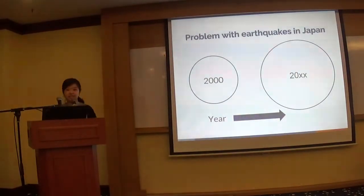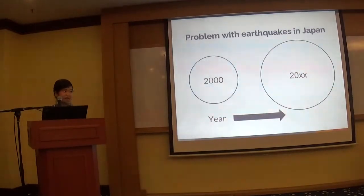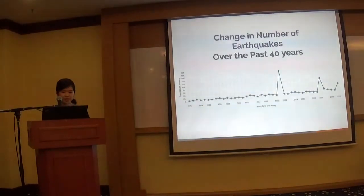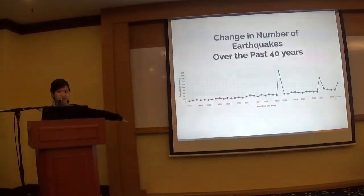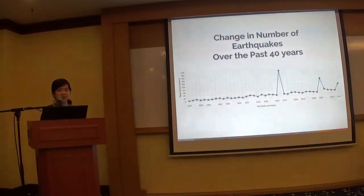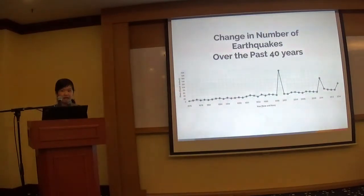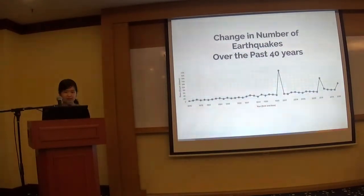The problem with earthquakes in Japan is that they are increasing year by year. The average number of earthquakes in Japan is about 2,000, but it's increasing every year as the graph shows. This is the graph of the change in number of earthquakes in Japan over the past 40 years. In 1976, there weren't that many earthquakes and the average was way lower than 2,000, but now the number each year is always over 2,000. Earthquakes are causing a lot of problems in Japan and affecting many people's lives.